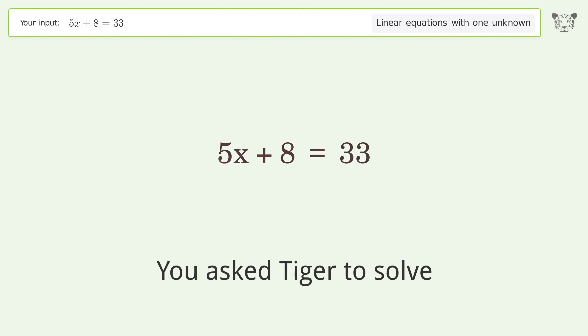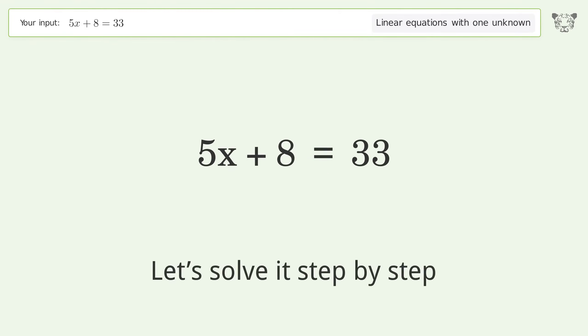You asked Tiger to solve. This deals with linear equations with one unknown. The final result is x equals 5. Let's solve it step by step.